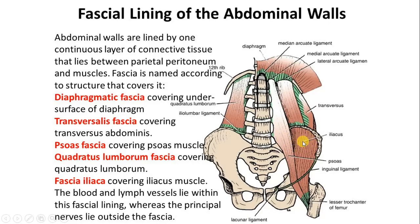When the fascia comes over the iliacus muscle it is named fascia iliaca. The important thing is that here is the arcuate line, the attachment of the fascia lining, and the median arcuate ligament. The medial arcuate ligament is over the psoas, and then there is the lateral arcuate ligament over the quadratus lumborum attached at the upper end. So all of this will be covered by the fascia.